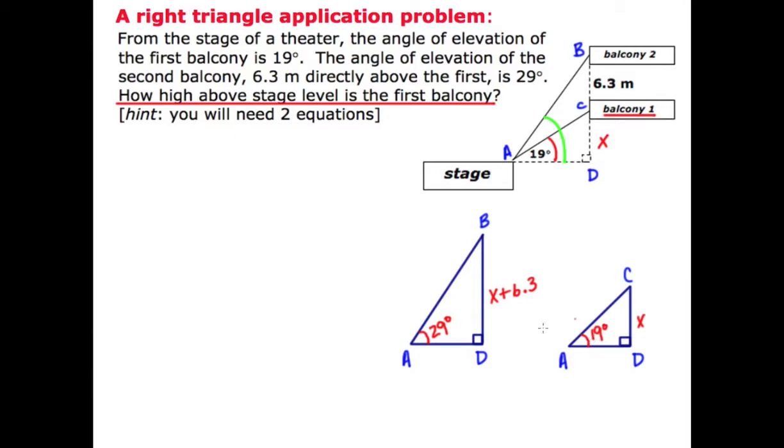The larger right triangle, triangle ABD, has an angle of elevation of 29 and an opposite side of X plus 6.3. To make that clear where I got the X plus 6.3, we have the X over here and we've got the 6.3 there and I just add those together to get the segment BD.